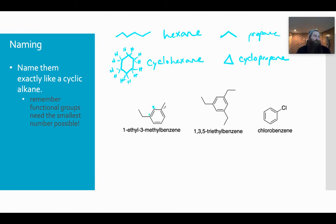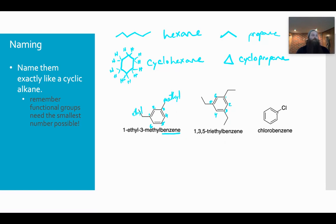Starting at position 1 and going 1, 2, 3, 4, 5, 6 — my parent molecule, because it has those double bonds, is actually benzene. At position 1, I have an ethyl group. At position 3, I have a methyl group. As long as my numbering starts on one of the ethyl groups, this would be 1,3,5-triethylbenzene. If we want to be accurate about the chloro compound, it would be 1-chlorobenzene — though chlorobenzene would probably suffice.